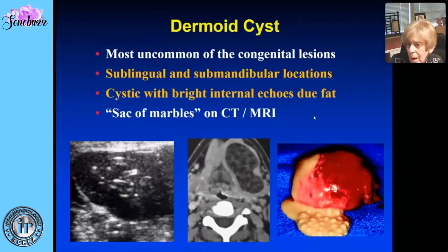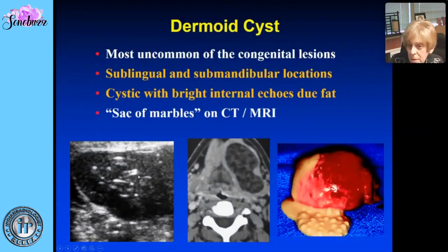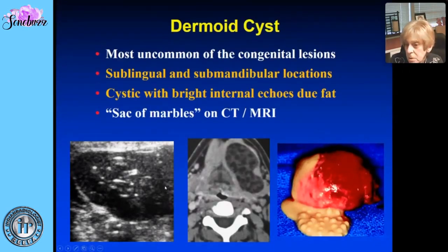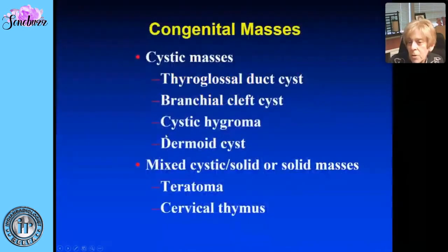The fourth cystic lesion is the dermoid cyst — the most uncommon of the congenital lesions, but recognizable if you see one. They arise in sublingual and submandibular locations. They are cystic with very bright internal echoes due to fat. On CT or MR it has a so-called 'sack of marbles' appearance, with low-intensity structures due to fat content.